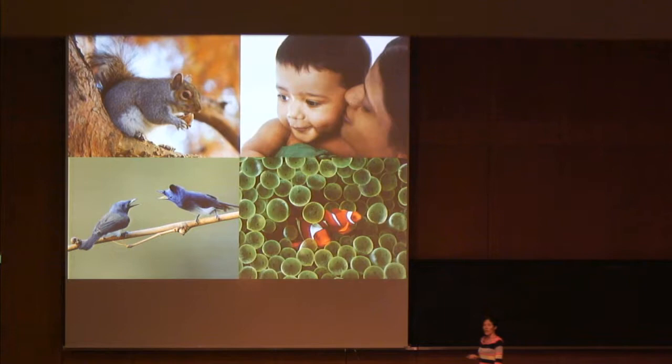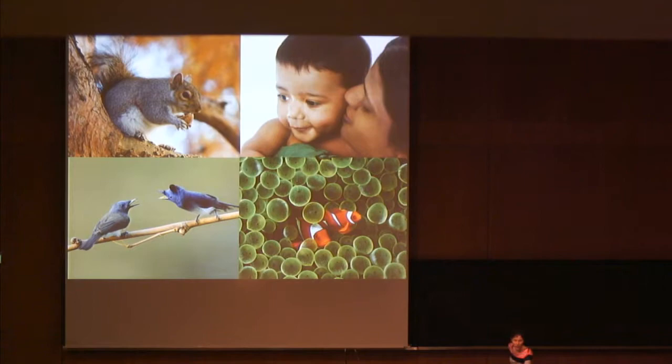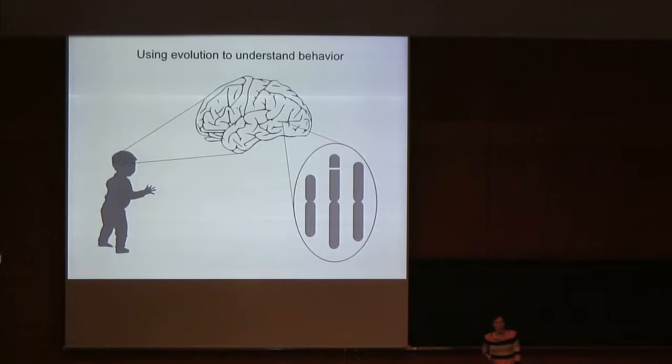Behaviors are often some of the first traits to change during adaptation and can play a critical role in the evolution of new species. The goal of my lab is to take advantage of these evolutionary shifts to understand how behaviors are controlled by genes and neurons.